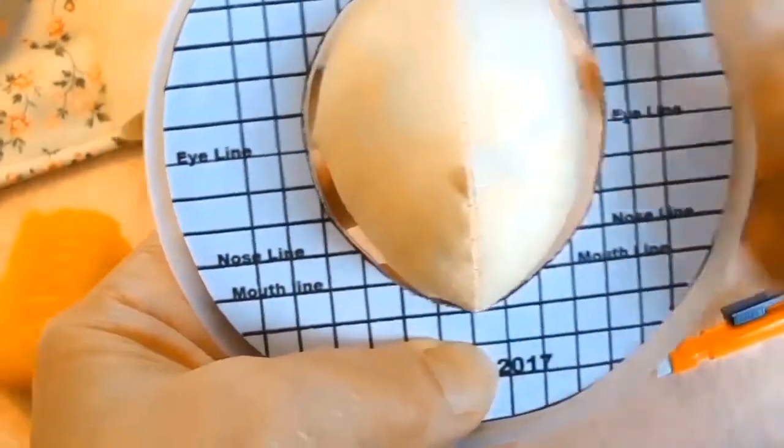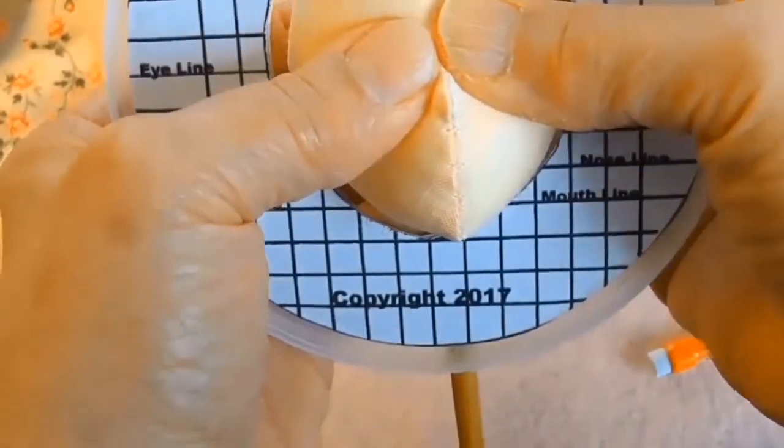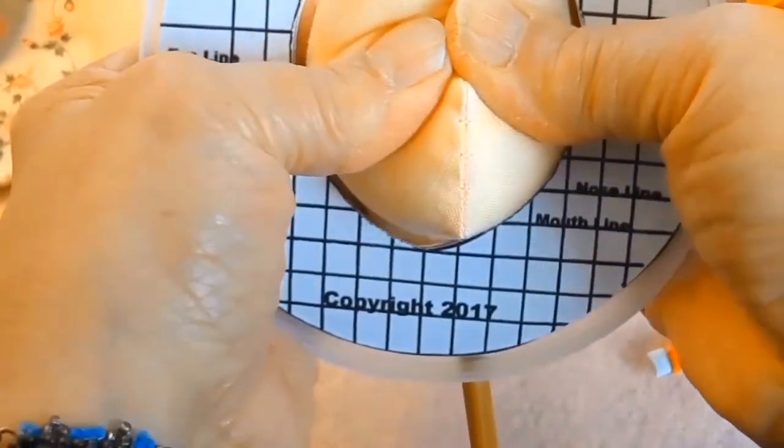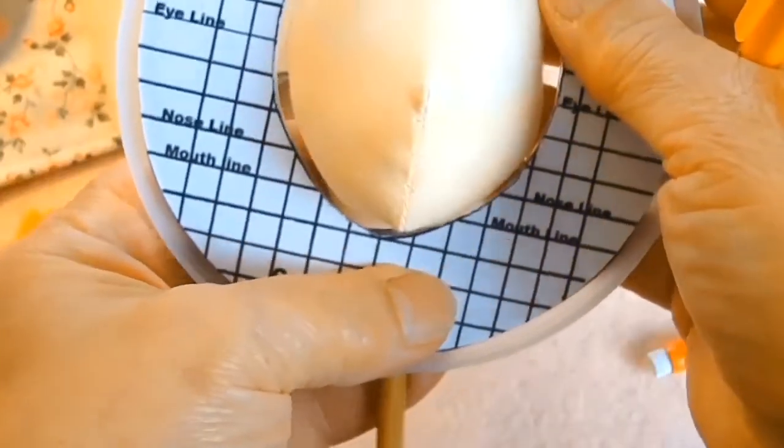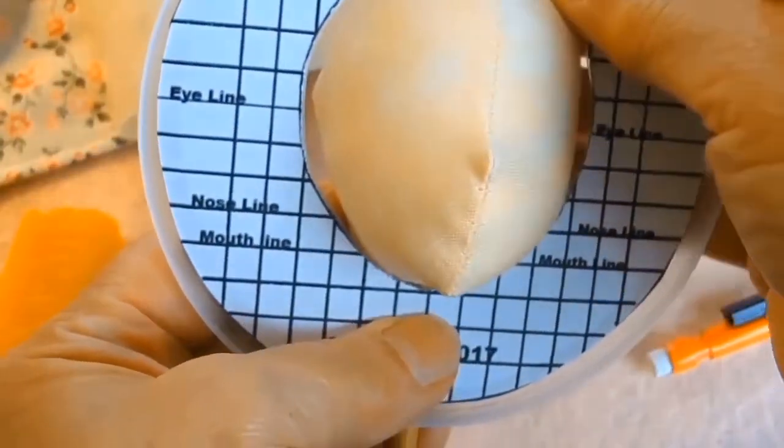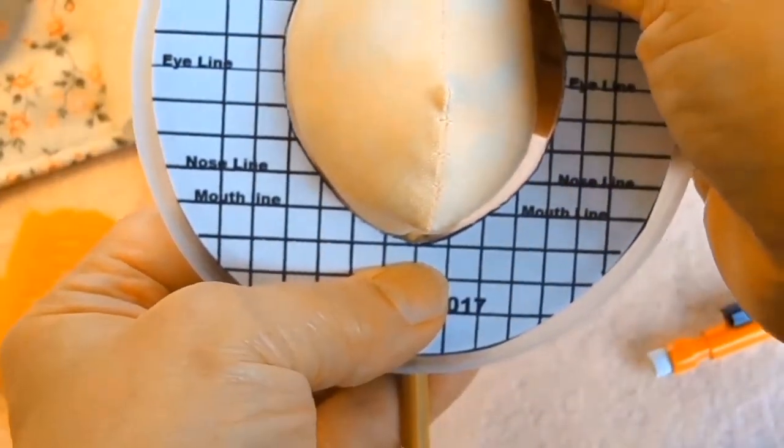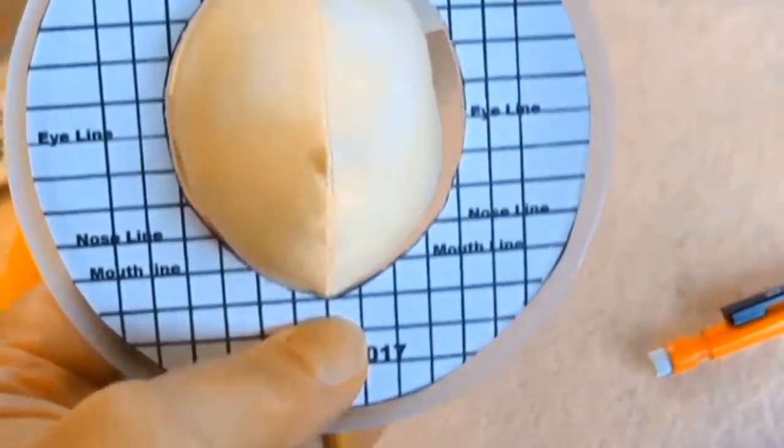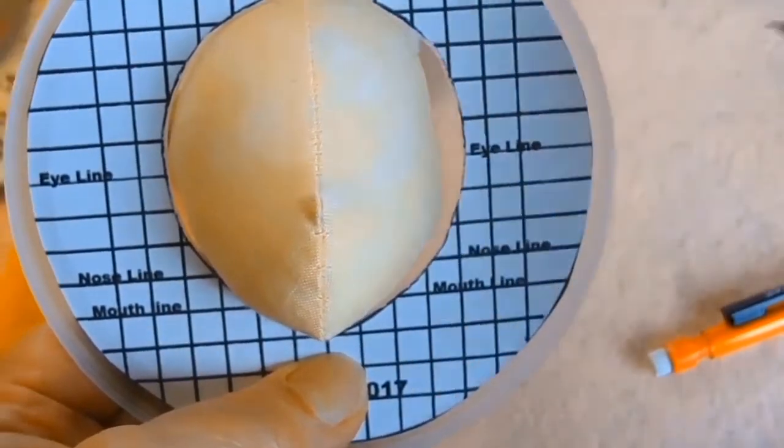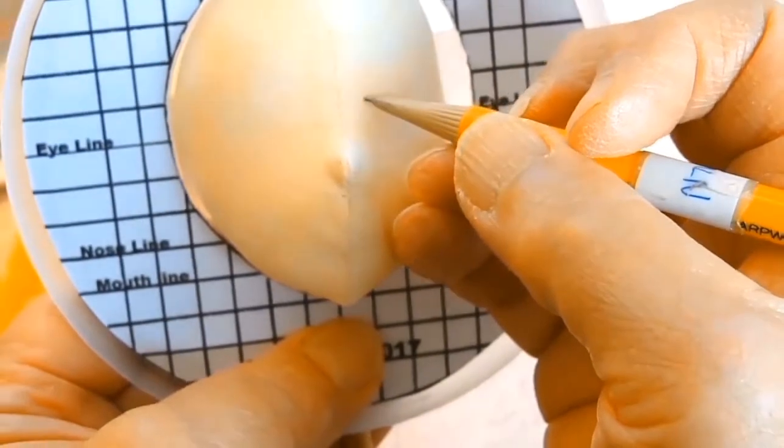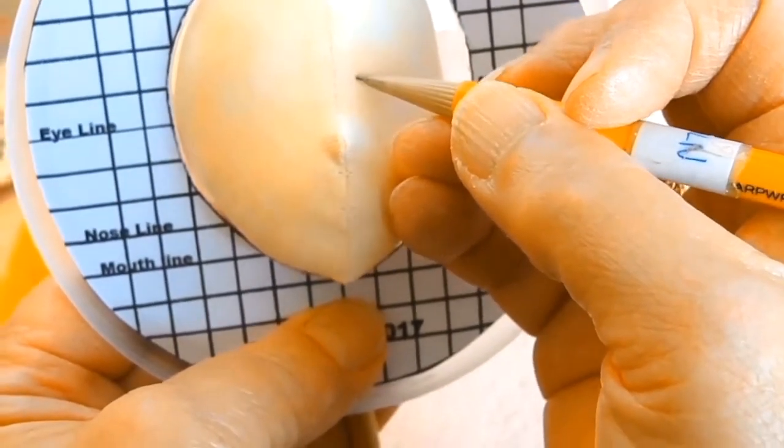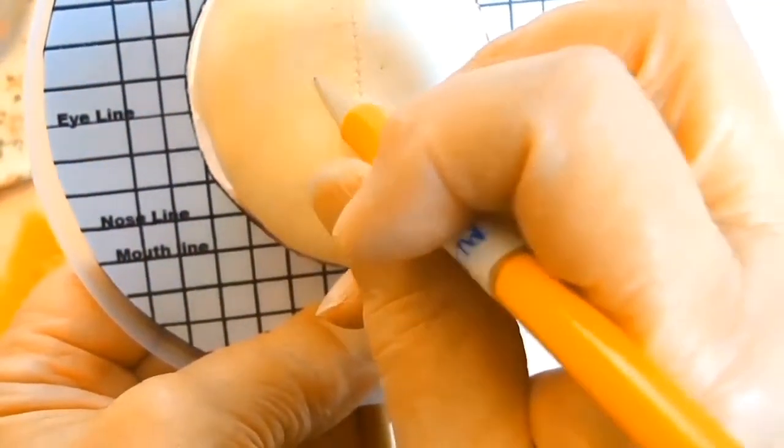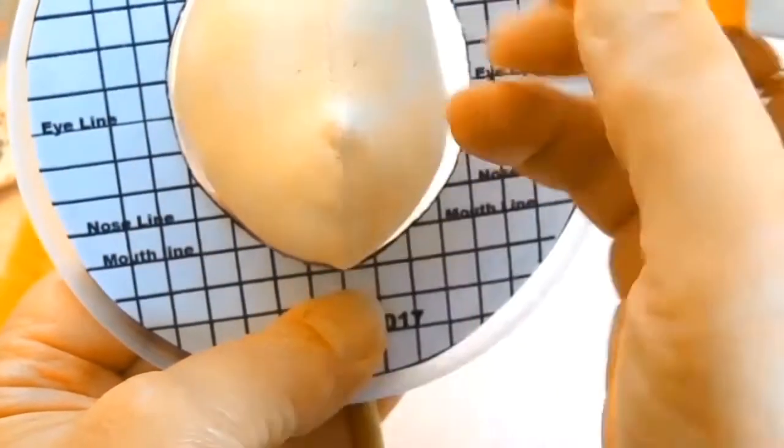What I do is I put the cloth doll head on a chopstick so that I can stabilize it while I'm using the template, and then I place the head inside the oval of the template. Then I use those lines on the template to give me a reference point for where all of the facial features are.